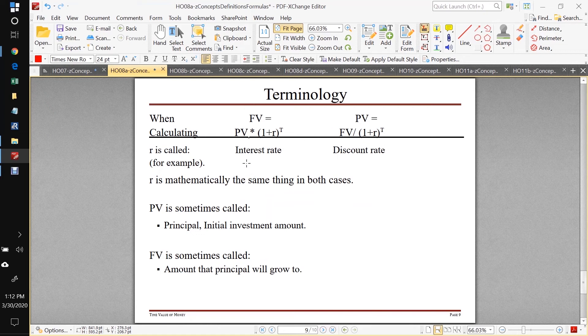And we had some terminology, which we've continued to use all the way through chapter 11b. And we will for the rest of the term. So when we're calculating r, and we're going forward in time, we call that the interest rate. And when we're coming back in time, same r, mathematically the same quantity, but it's called the discount rate when we're coming back in time and solving for a PV. And the present value is sometimes called the principal or initial principal or initial investment amount. Future value is sometimes called the amount that principal will grow to.